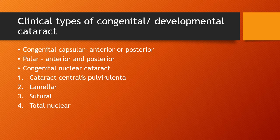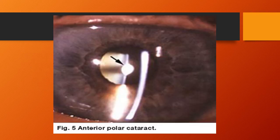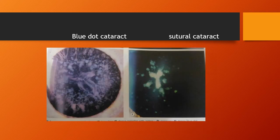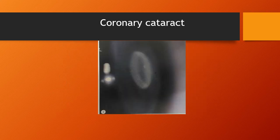Clinical types of congenital or developmental cataract include congenital capsular cataract — anterior or posterior capsular cataract — polar cataract — anterior and posterior — congenital nuclear cataract including cataracta centralis pulverulenta, lamellar cataract, sutural cataract, and total nuclear cataract. Generalized cataracts include coronary, blue dot, total congenital cataract, and membranous cataract. Images shown include anterior polar cataract, blue dot cataract, sutural cataract, nuclear and lamellar cataract, and coronary cataract.